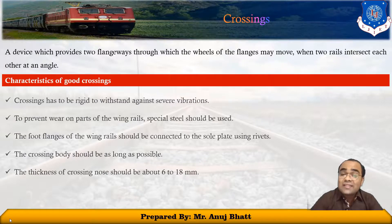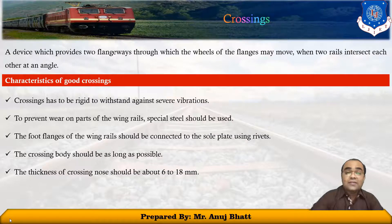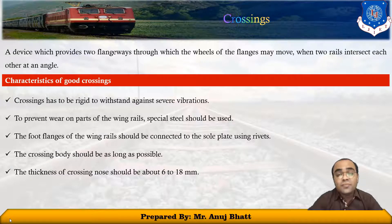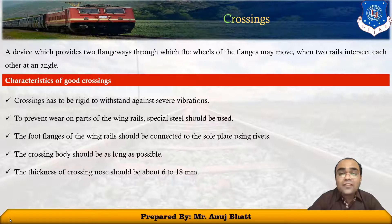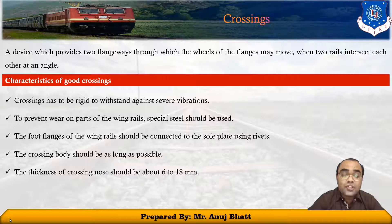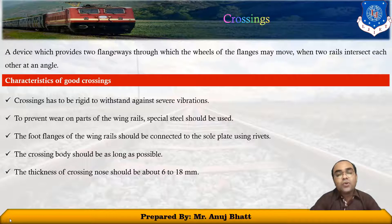Talking about the characteristics of a good crossing: the crossing has to be rigid to withstand severe vibrations. To prevent wear on the parts of the wing rails, special steel should be used. The foot flange of the wing rails should be connected to the sole plate using rivets. The crossing body should be as long as possible. The thickness of the crossing nose should be about 6 to 18 mm.